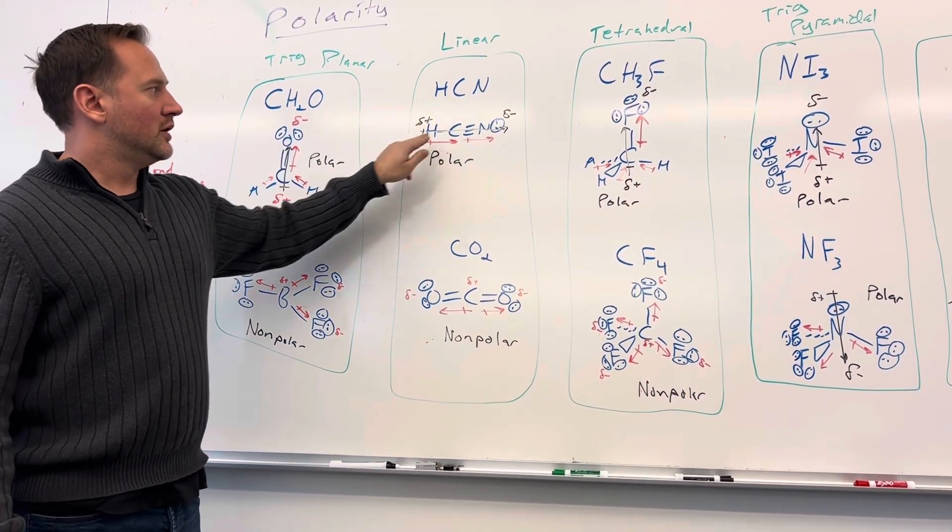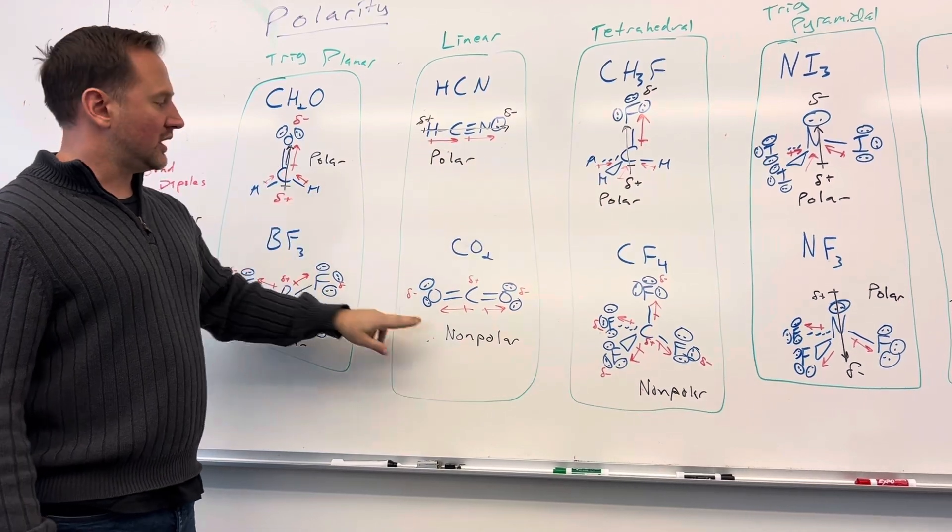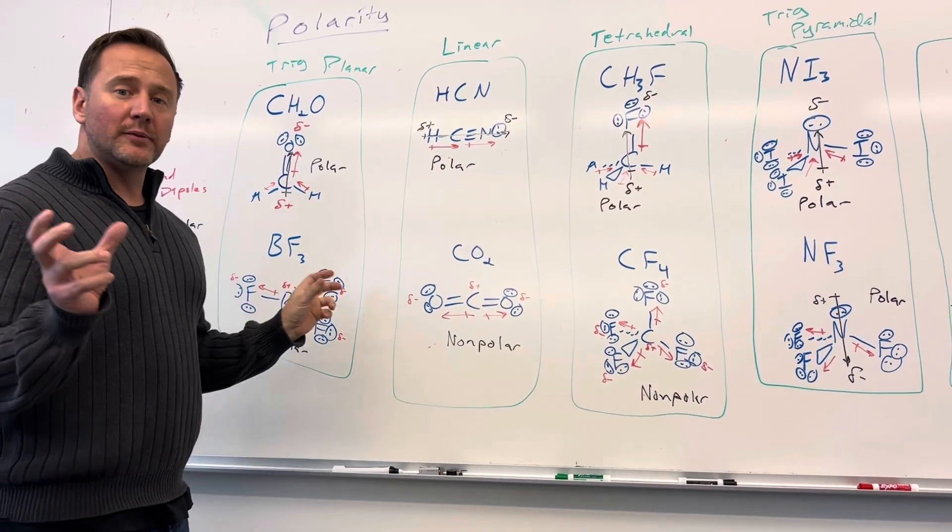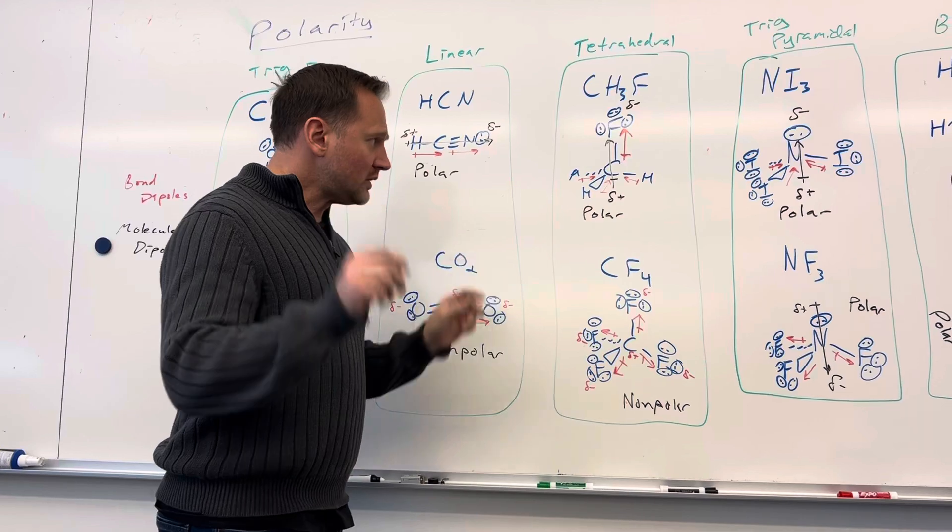So linear can either be polar if it's got multiple elements bonded to the central atom, or non-polar if the two elements bonded to the central atom are the same.